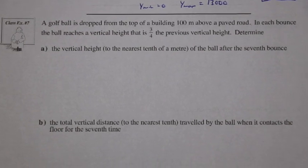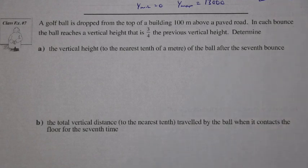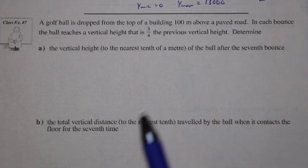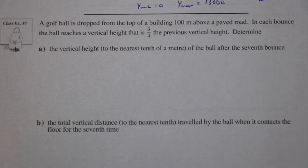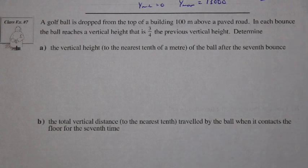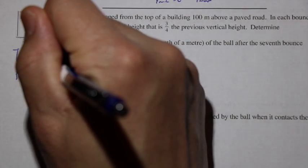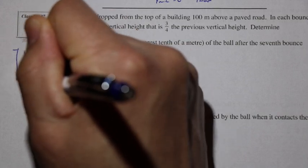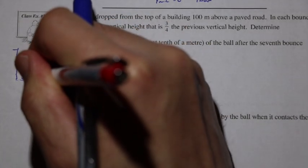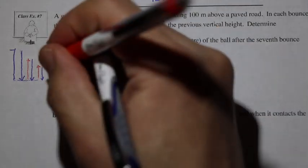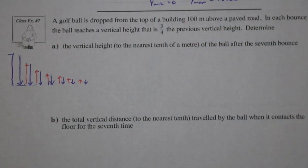Class example 7: a golf ball is dropped from the top of a building 100 meters above the ground. In each bounce, the ball reaches a vertical height that is three-quarters of the previous vertical height. We want to find the vertical height to the nearest tenth after the seventh bounce. Drawing a diagram: the ball drops, bounces up to three-quarters of its height, comes back down, then bounces up to 75% of that again, and the process continues.